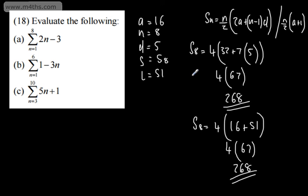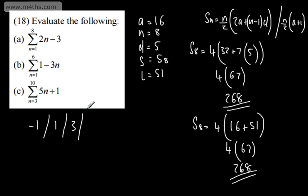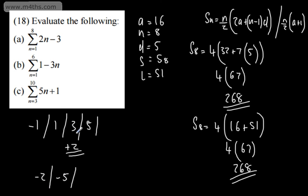Check how many terms you have to substitute in. If you're not sure what the common difference is, just generate some terms. For 2n minus 3: n equals 1 gives negative 1, n equals 2 gives 1, n equals 3 gives 3, n equals 4 gives 5 — going up by 2 each time. For 1 minus 3n: n equals 1 gives negative 2, n equals 2 gives negative 5, n equals 3 gives negative 8, so the difference is negative 3.